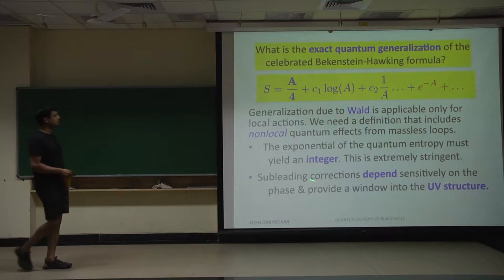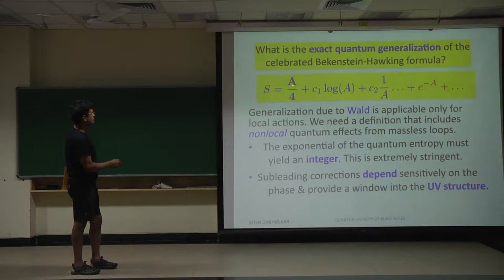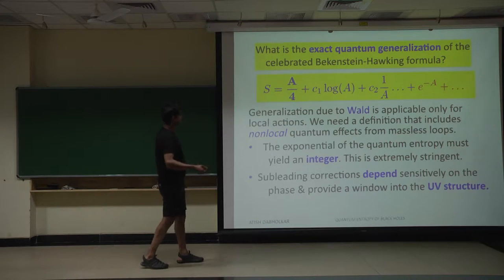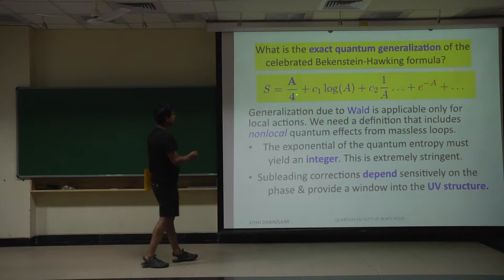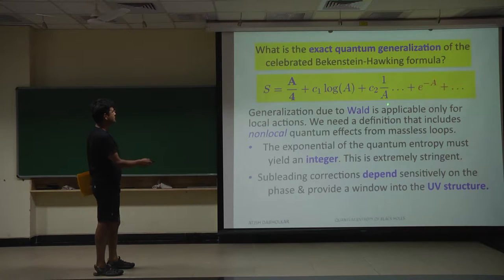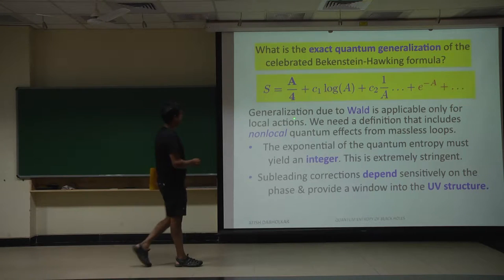The question I started to address yesterday was: what is the exact quantum generalization of the Bekenstein-Hawking formula, in a manner that generalizes and incorporates Wald's generalization, but can also incorporate non-local quantum effects? This area formula comes from the Einstein-Hilbert action. Corrections come from a derivative expansion — large area means small curvature, large radius of curvature. So these are higher derivative terms in the action, like R-squared terms, which come from integrating out massive fields; there can also be non-perturbative corrections. The goal is to give a definition that captures all of this and develop methods to compute them.